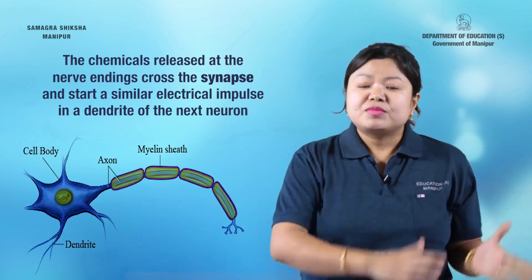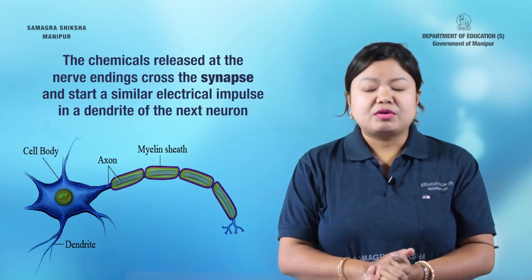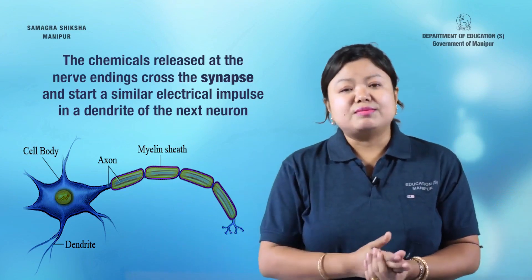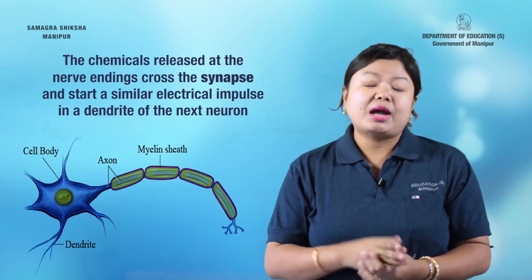The impulse eventually reaches other cells such as muscle cells and gland cells.